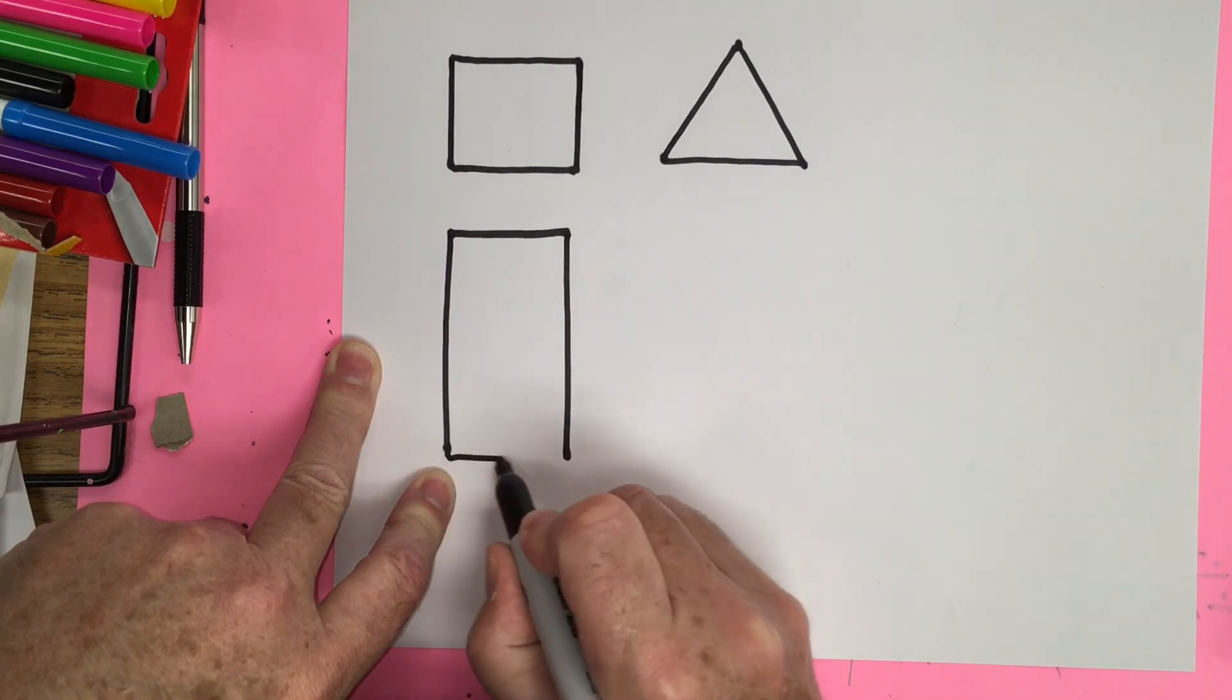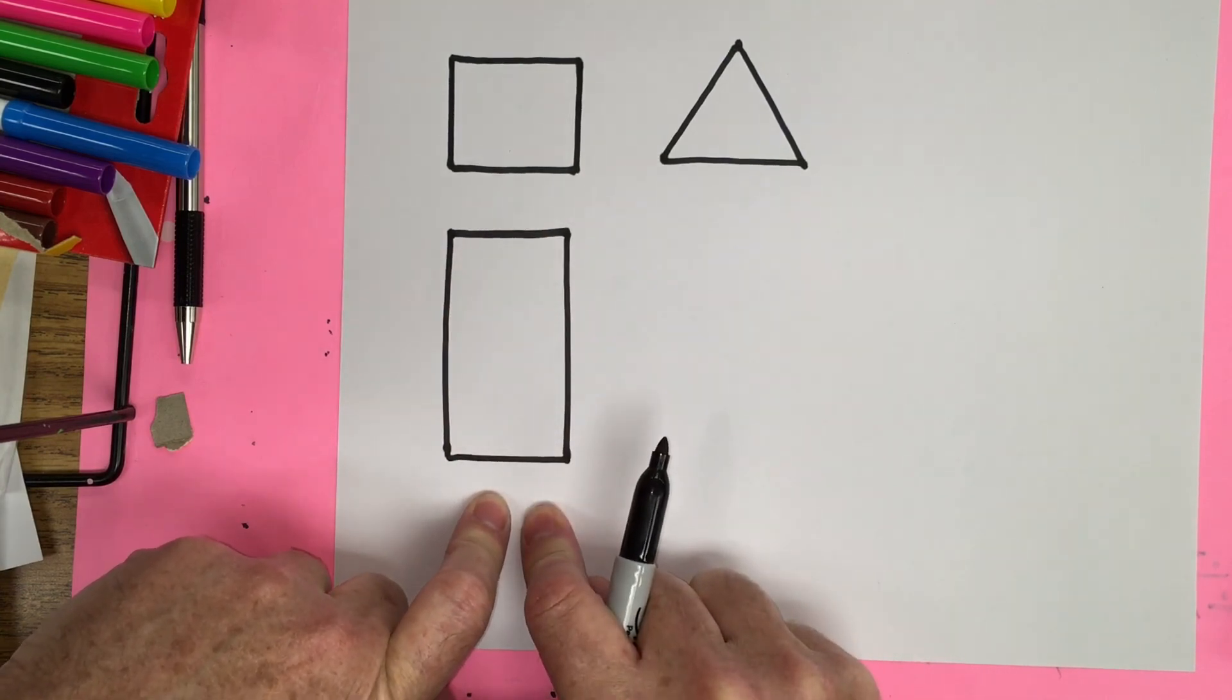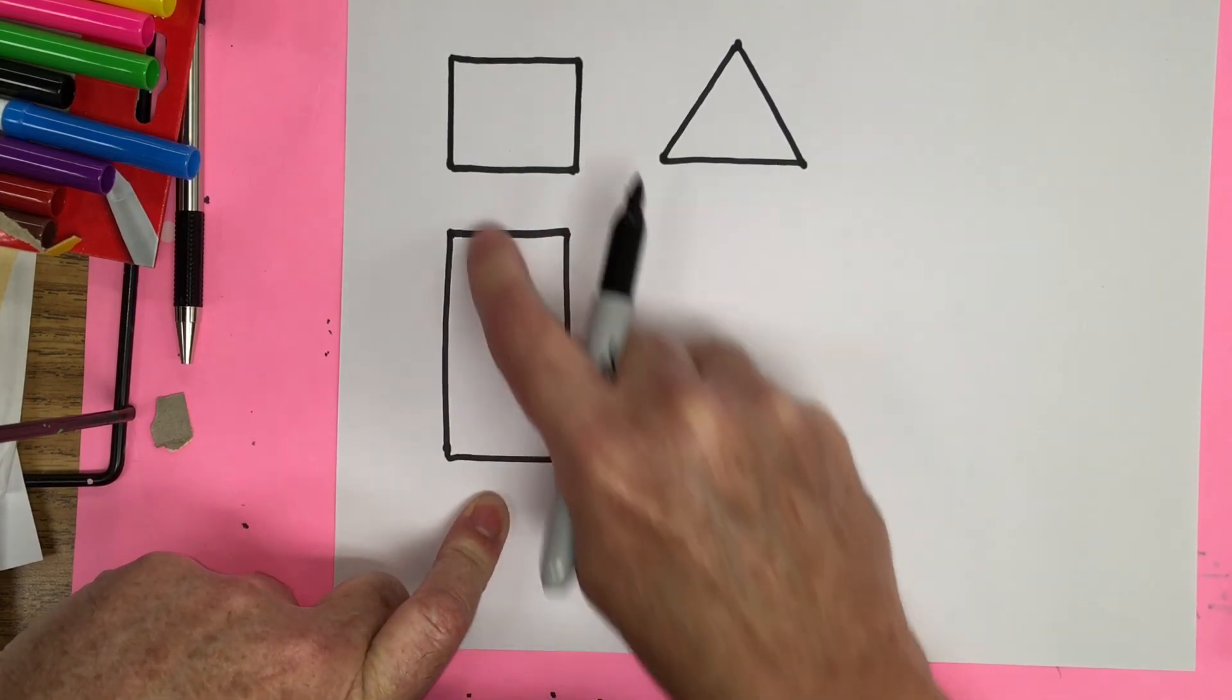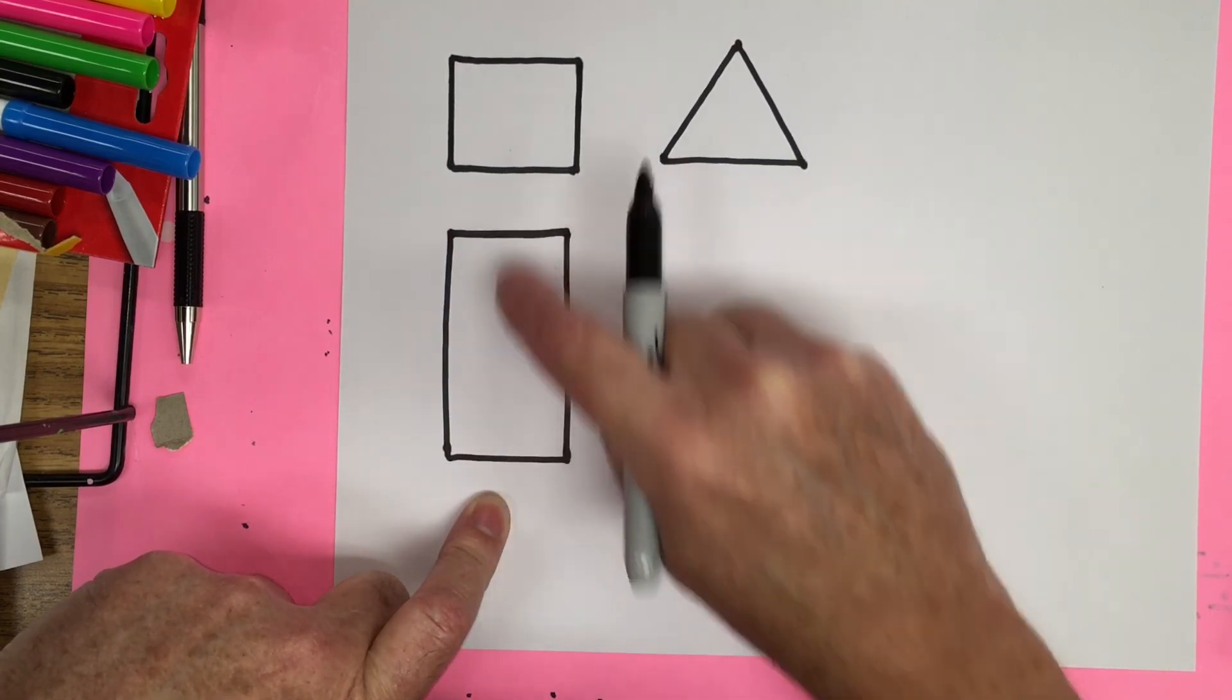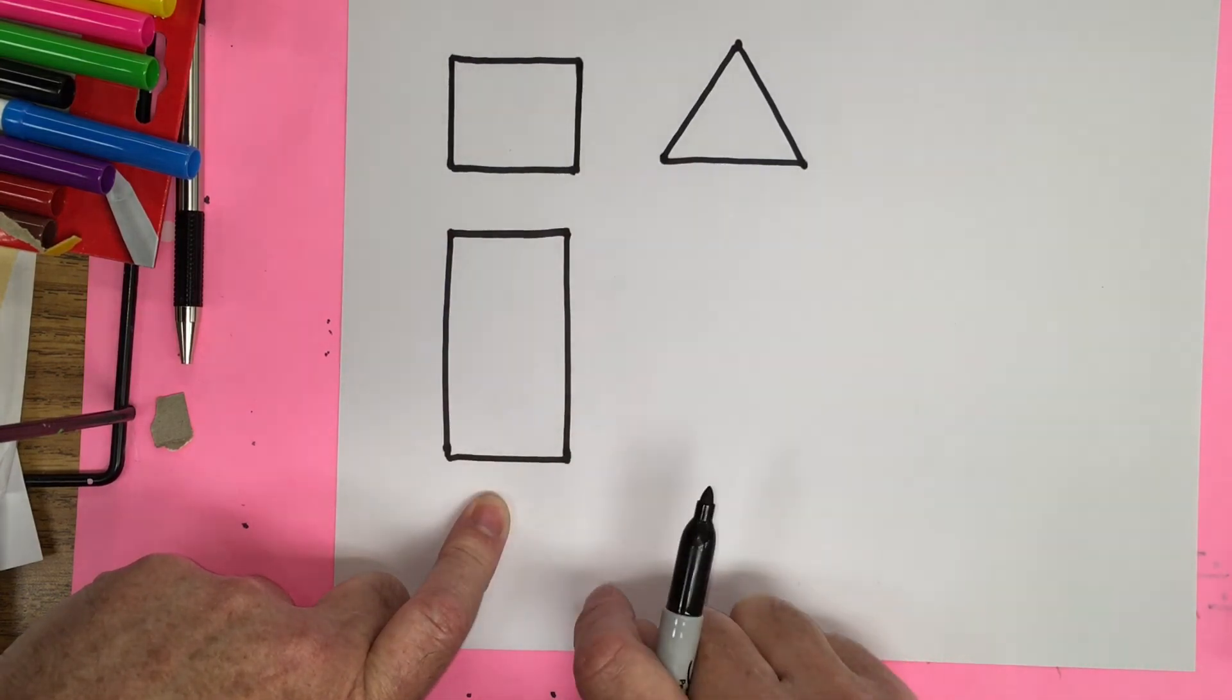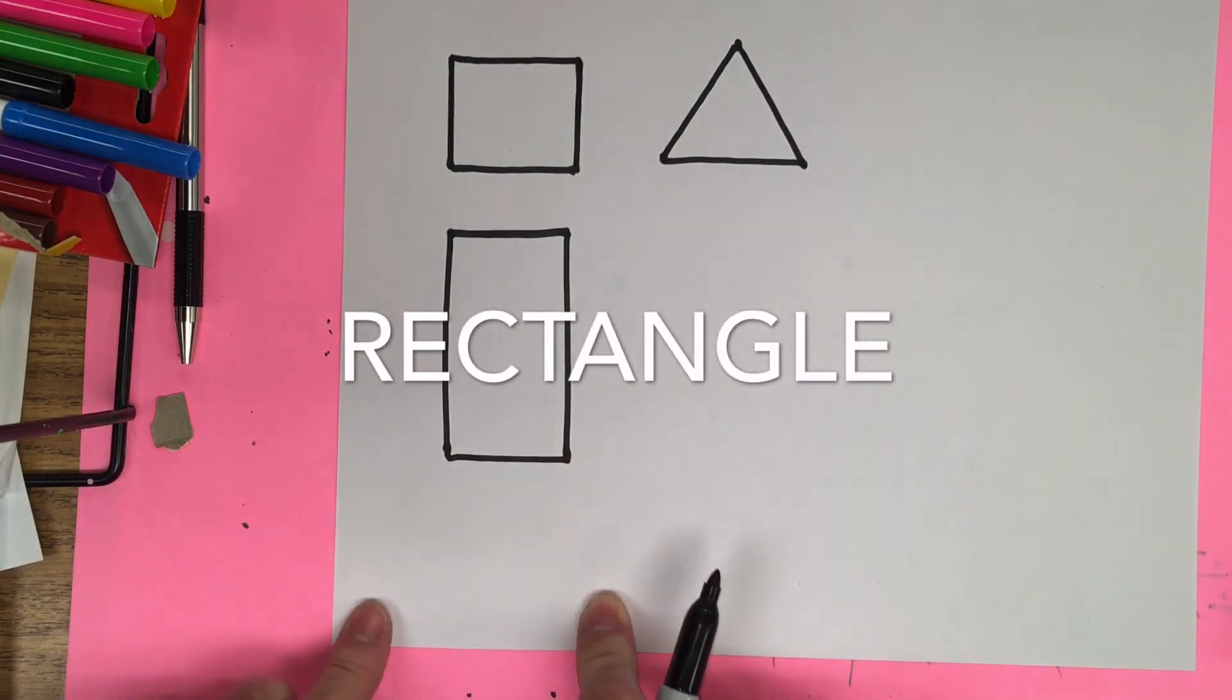And then I'm going to come across and so now I have four sides. Two are the same and two are the same. These two match and these two match. That's a rectangle.